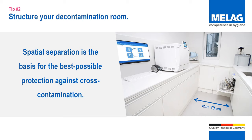A structured decontamination room is the basis for the best possible protection against infection. When planning a decontamination room, it is important that the clean and dirty zones are separated. The dirty zone comprises the delivery area of contaminated instruments, a workstation for manual preparation, and cleaning and disinfection, ideally with an automatic washer and disinfector. The control and unloading area for the washer disinfector and functional checks are in the clean zone. The sealing device, steam sterilizer, and documentation media are in the pure zone. The arrangement of devices should always correspond with the decontamination process to prevent cross-contamination.